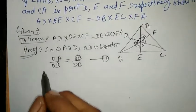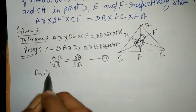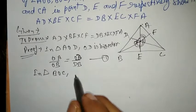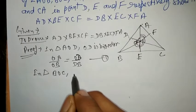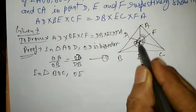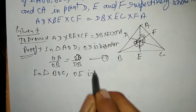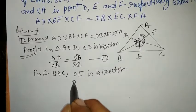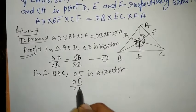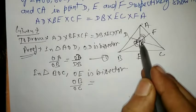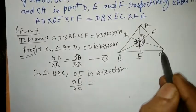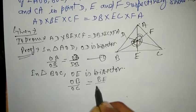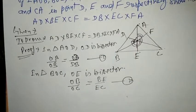Similarly, in triangle BOC, OE is the angle bisector. Therefore OB upon OC is equal to BE upon EC. This is equation 2.